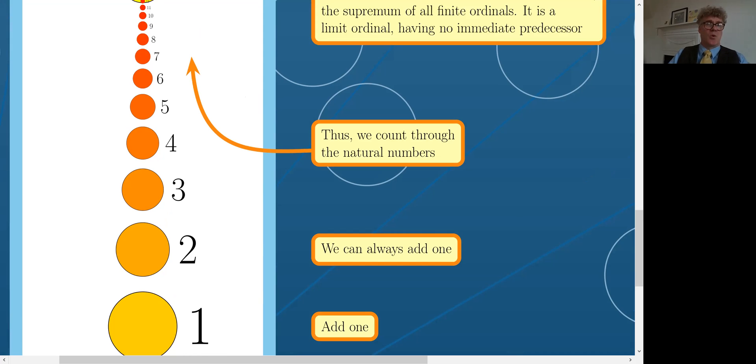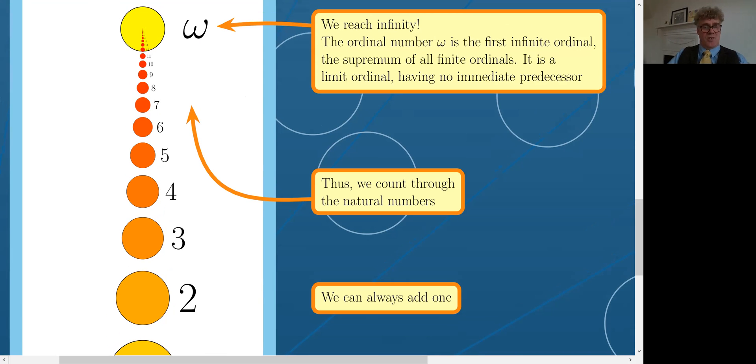Omega, the first infinite ordinal, which is a limit ordinal because there's no immediately preceding ordinal number to omega. Anything less than omega is a finite number and then there's a lot of other finite numbers between that number and omega.